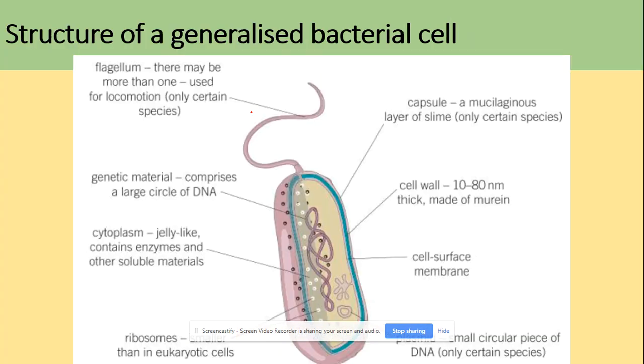So there is the structure of the bacterial cell. In terms of the main differences is the circular DNA. They've got the cytoplasm, they've got ribosomes but they are smaller, so we've got here 70S ribosomes. We've got plasmid which is a circular loop of DNA, cell surface membrane, cell wall, capsule, so those are those layers that we were talking about, and we've got flagellum.